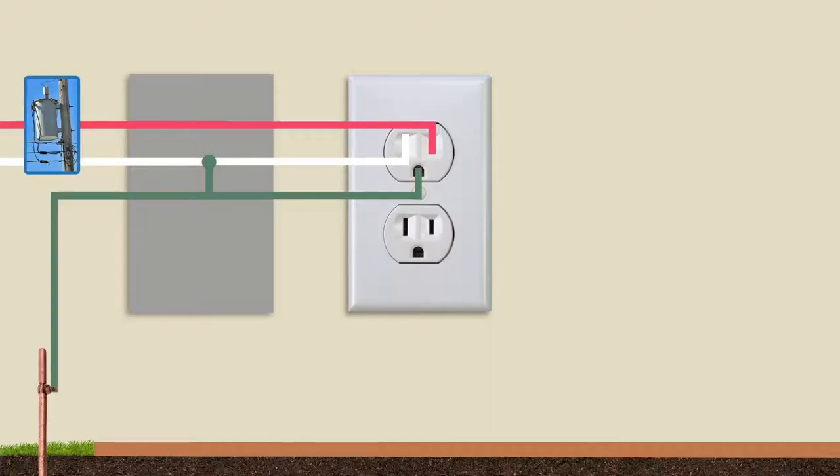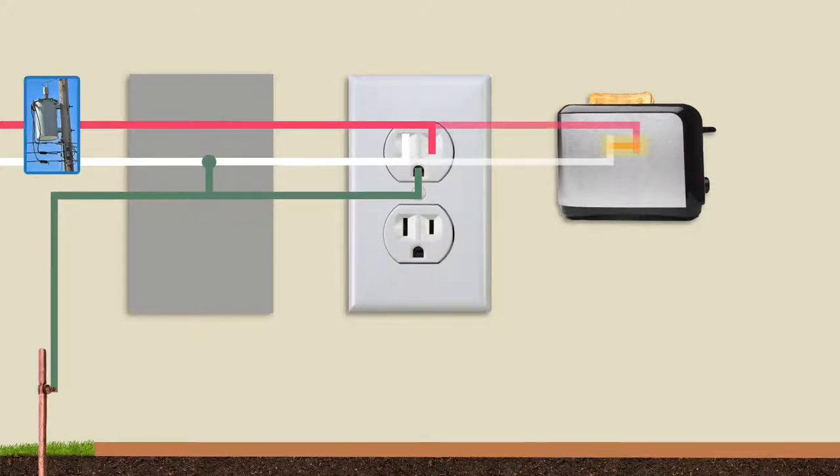Let's use the example of a toaster to demonstrate why things are wired this way. The toaster's heating elements connect to the hot and neutral lines through the power cord. Also through the power cord, the metal cabinet of the toaster is connected to the ground line.